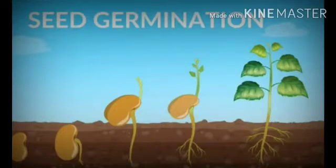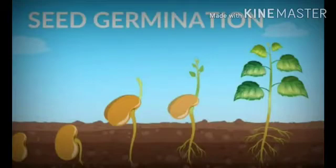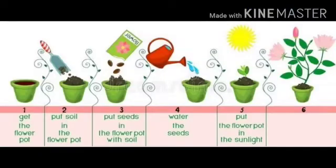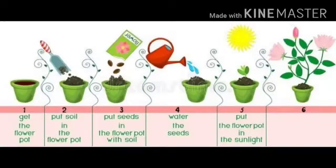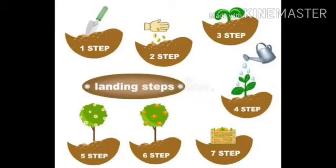Germination means how from a small seed a tiny plant is grown — germination means to grow. Different types of seeds need different amounts of water to grow. You can also grow a plant at home. Firstly, take a flower pot, put soil in it, then put seeds in the flower pot. Give it proper water and proper sunlight, and after a few days a small plant will be grown. Students, you all can try this at home.